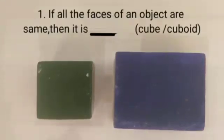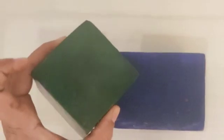If all the faces of an object are same, then it is a dash. We have 2 options. Cube and cuboid. Let's see.